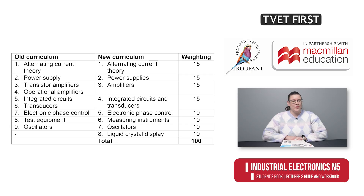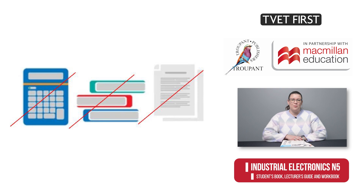The old curriculum gave no indication of weighting. However, the module names are the same for the most part and the weighting is rather evenly spread across the modules. The final exam is still a closed book three-hour paper counting 100 marks with a formula sheet attached. Students are allowed scientific calculators, but they are not allowed to bring programmable calculators, reference works, previous examination papers or memorandums.